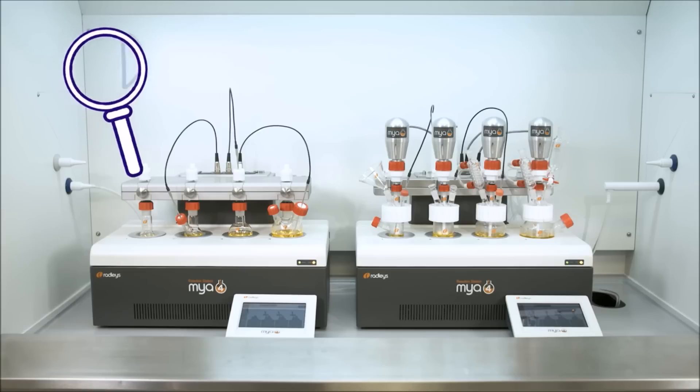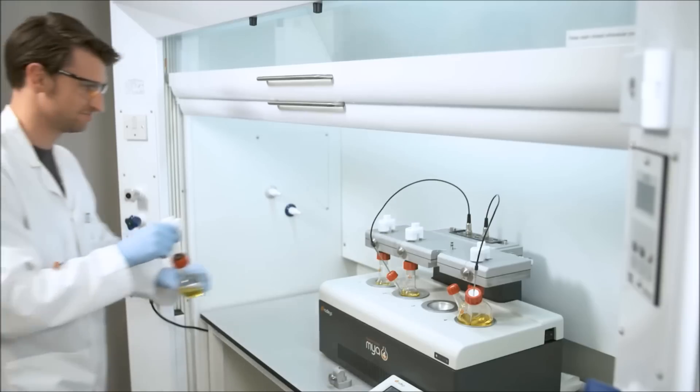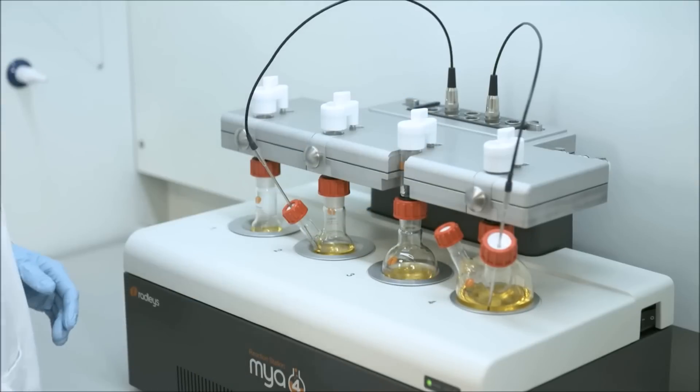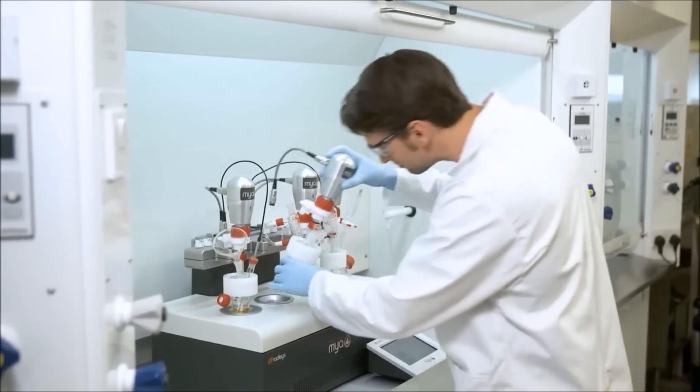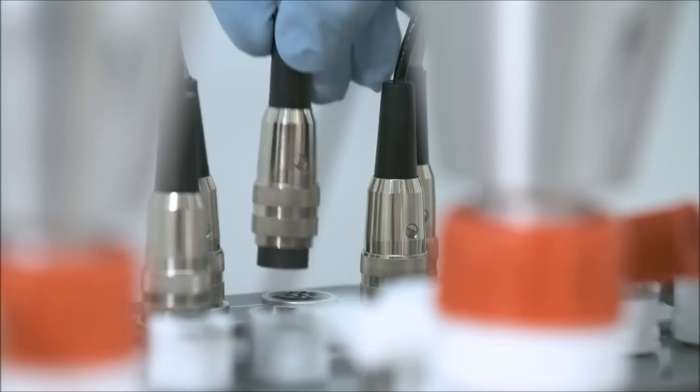Set up Maia 4 in any configuration you like or choose one of our pre-configured packages. The Discovery package with magnetic stirring is ideal for test tubes and round-bottom flasks. And the process package with overhead stirring and process vessels is perfect for mimicking jacketed reactors.